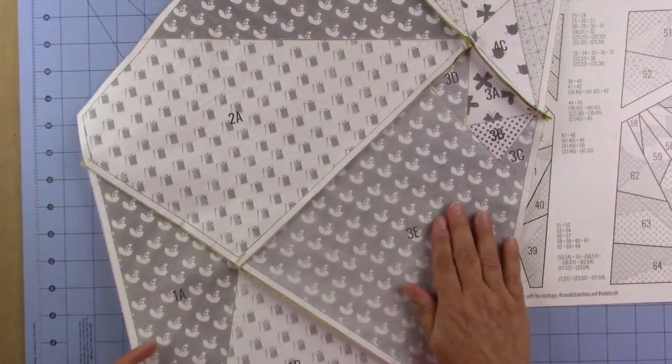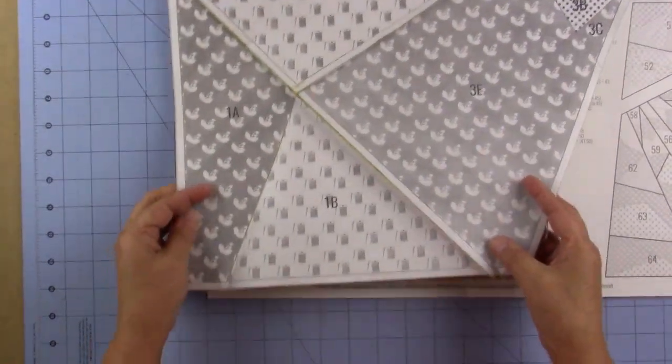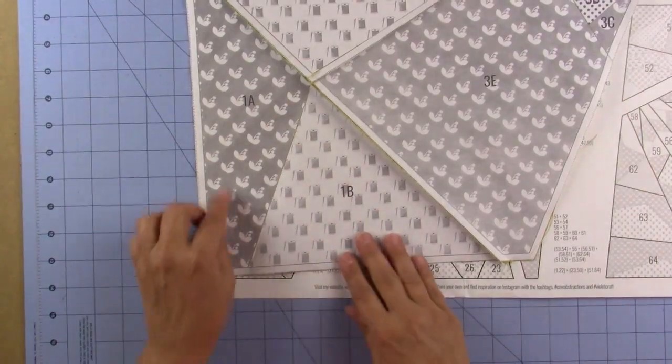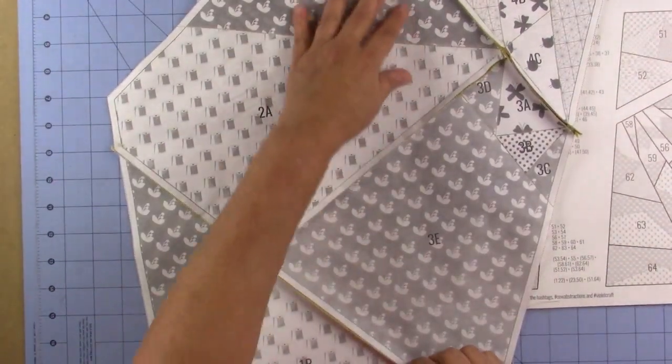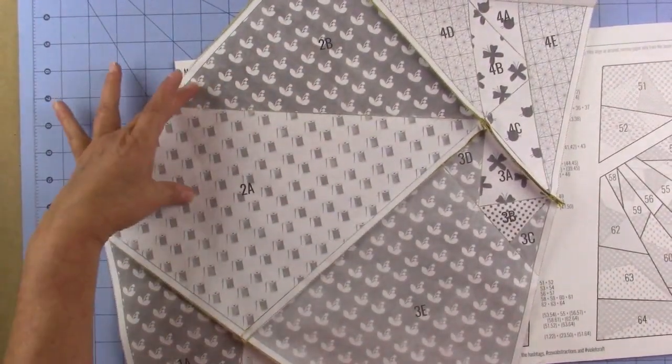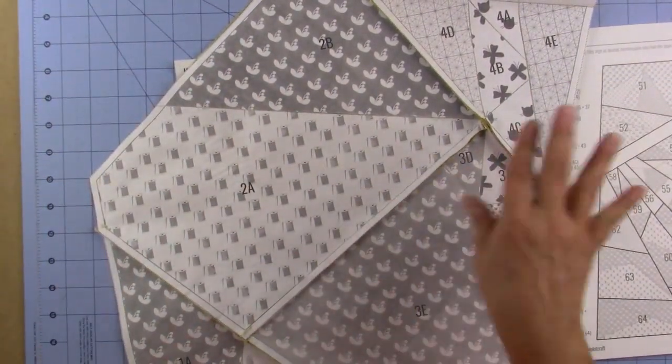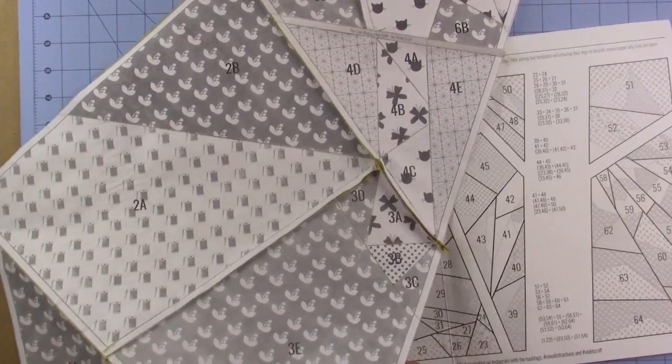It's already seamed and the pieces are done. Here is unit one and there are two fabrics A and B. Here's unit two, also with two fabrics, and so it goes on all the way to unit seven.